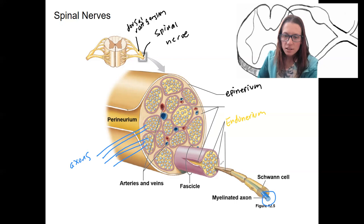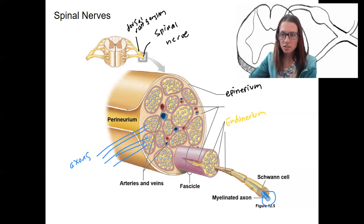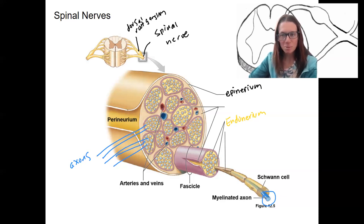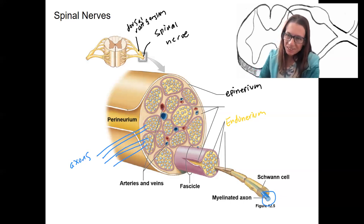The endoneurium is right here surrounding the Schwann cell. Then, packing all these axons together — all this yellow — is what packs a bunch of axons into a fascicle. A fascicle is a group of axons — a neural fascicle. A muscle fascicle is a group of muscle fibers. These fascicles are grouped together to form our spinal nerve.